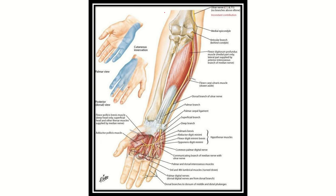In the question, the ulnar nerve is transected in the arm — above the forearm — so the ulnar nerve is damaged here. First we have to find all the muscles supplied by the ulnar nerve, then find the muscle which is not supplied. We can see the ulnar nerve's cutaneous innervation on the palmar aspect — it innervates the medial aspect of one and a half fingers and along the palm of the hand.